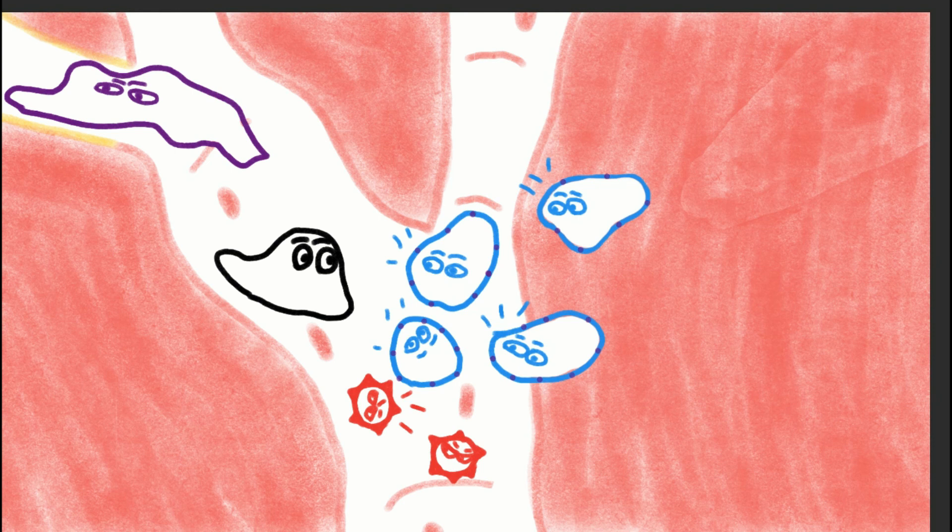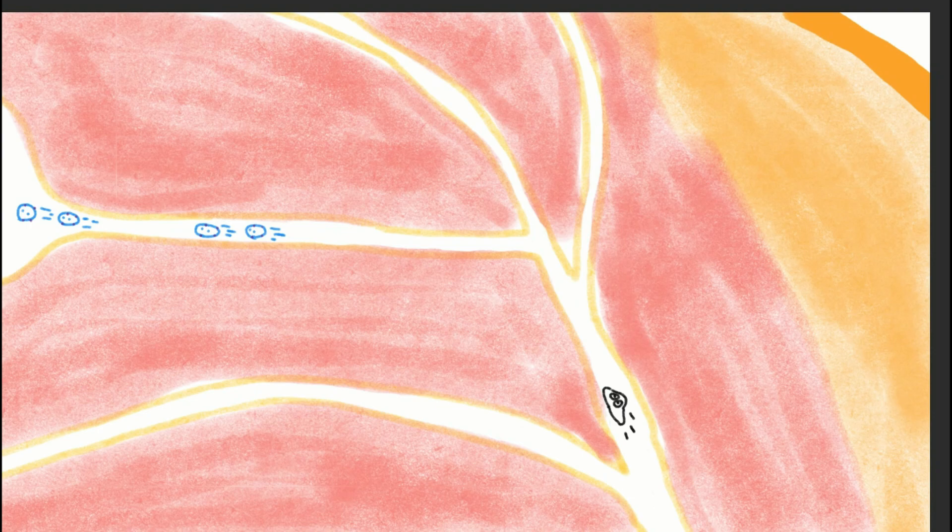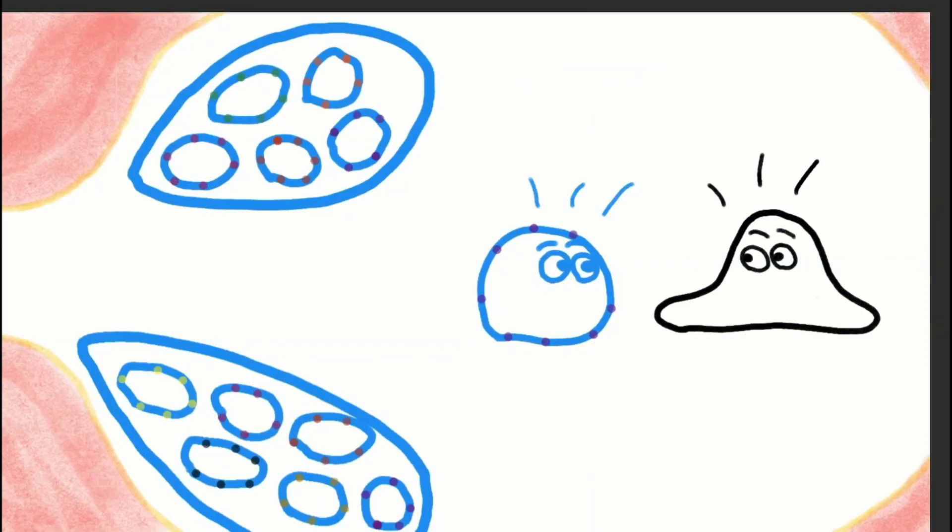The cells cheer, yay! And even a grumpy NK cell grudgingly admits, we couldn't have done it without you, boss. And so the T cell, along with the other cells, make its way back to the lymph node, and he feels very confident, and he eventually finds his friend, the B cell, again.